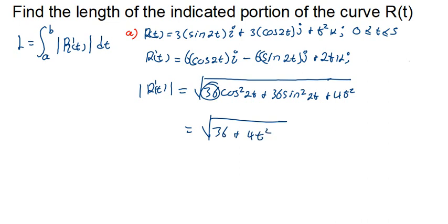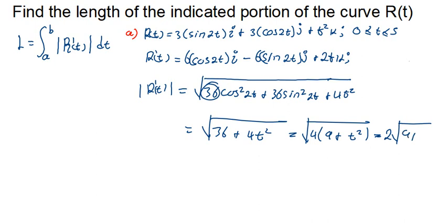We can simplify further: 4 goes into 36 nine times, so we have the square root of 4(9 + t²), which simplifies to 2√(9 + t²). So the magnitude of R'(t) equals 2√(9 + t²).